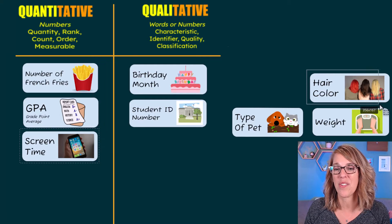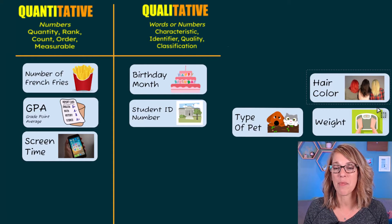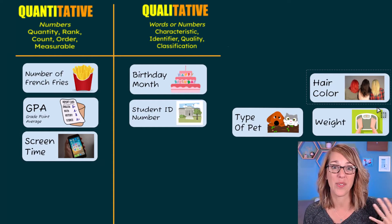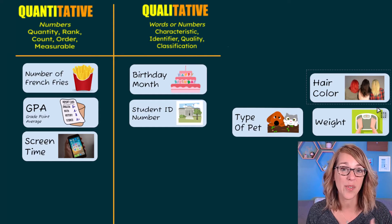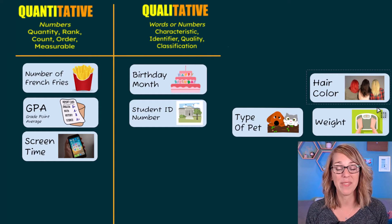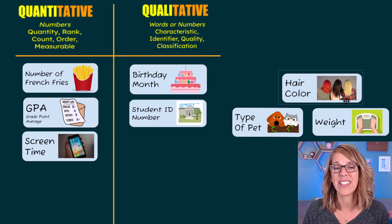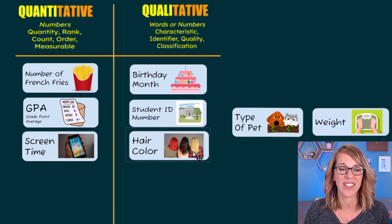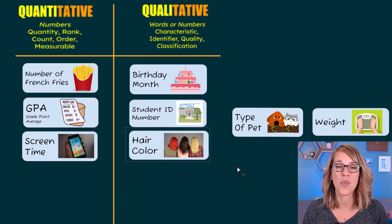Let's move on over here to hair color. So my hair might be blonde or brown or red or purple. Those are names. They're definitely words and it identifies one color from another. So that one lands there in qualitative.